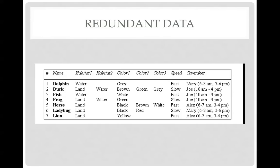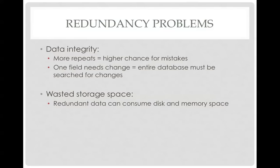As you can see, "land" is repeated five times in just habitat one, and there are many open spaces that don't take up much space, but they are still unnecessary.